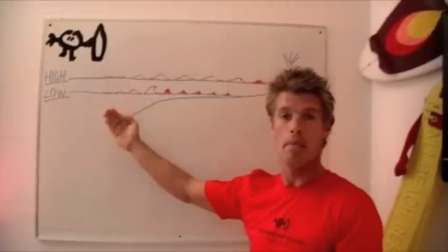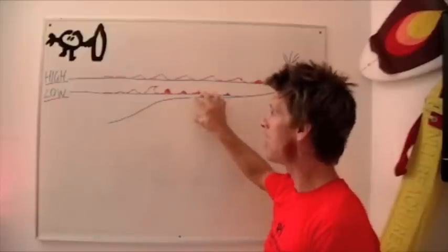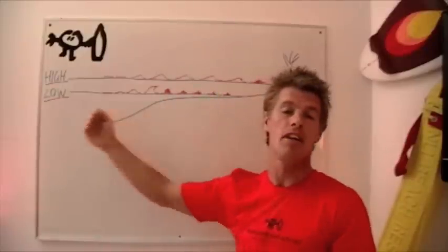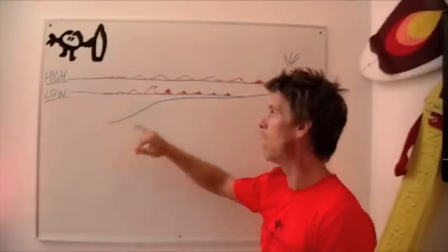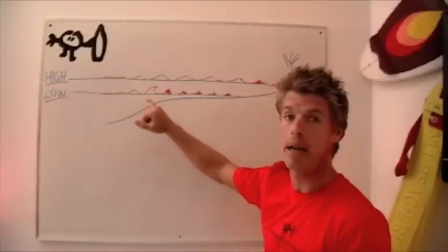So low tide out the back the waves are more powerful and they break much faster. On the inside in the white water you have these long forgiving soft gentle white water waves because the wave's used up all its power when it was out the back.